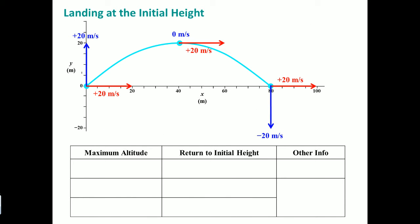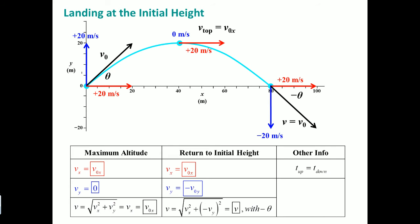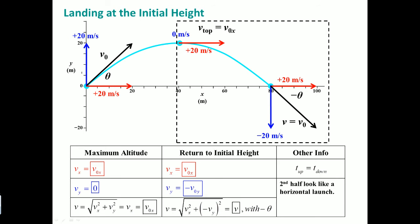Some mathematics show how both launch types behave. Notably, the second half of the angled launch looks exactly like a horizontal launch — as if the object is just being thrown off a cliff or tower from rest.